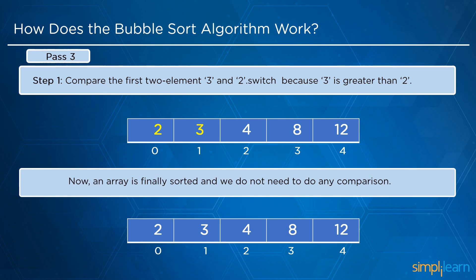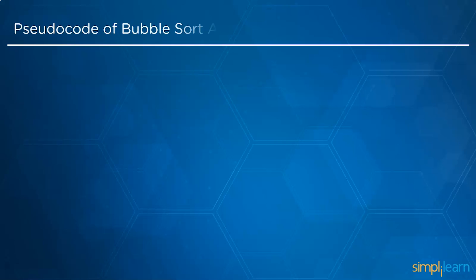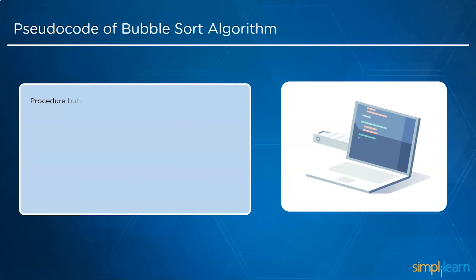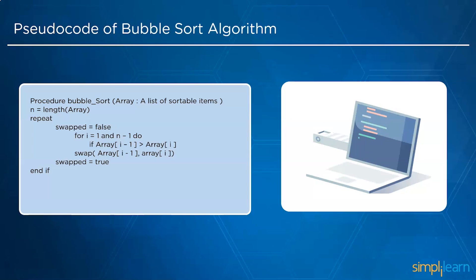After understanding the working process, we will look at the pseudo code. There is a function named bubble sort. It includes an array of sortable elements, with n as the length of the array. We repeat comparisons from the first to the last element. If the first element is greater than its next consecutive element, we swap both. Once we exit the loop, no more switching is needed, and the bubble sort function ends.